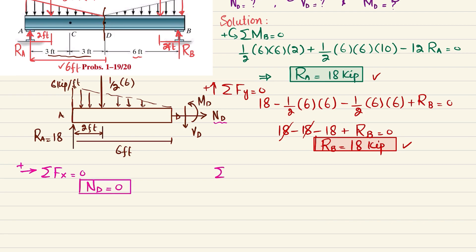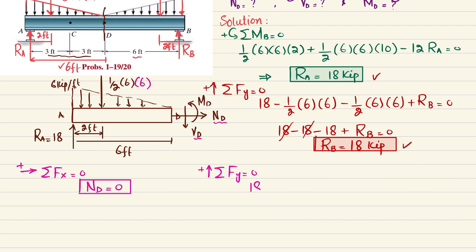The second equilibrium condition is the sum of all forces along the y-direction equals zero, with upward forces positive. There are three forces: RA = 18, the triangular load resultant 1/2 × 6 × 6 = 18, and VD. So: 18 − 18 − VD = 0, giving VD = 0.